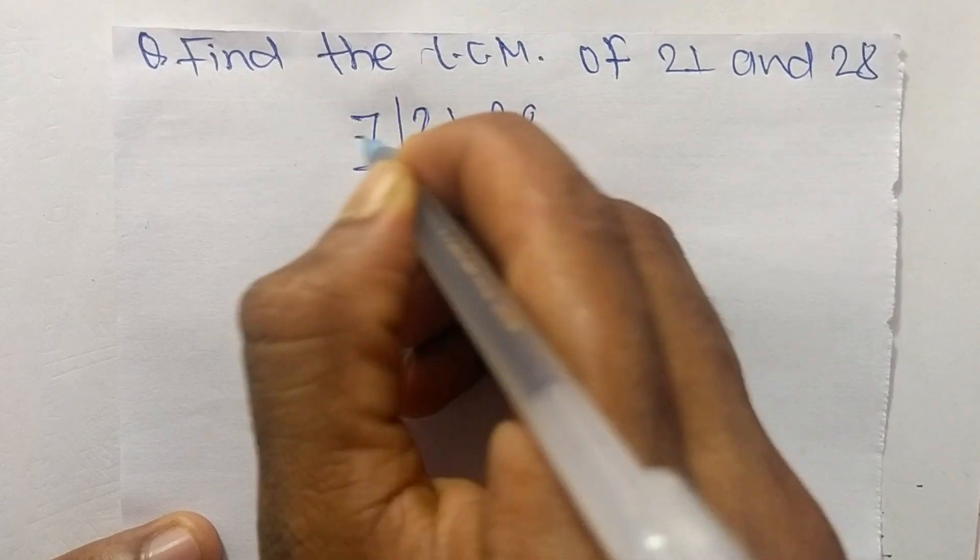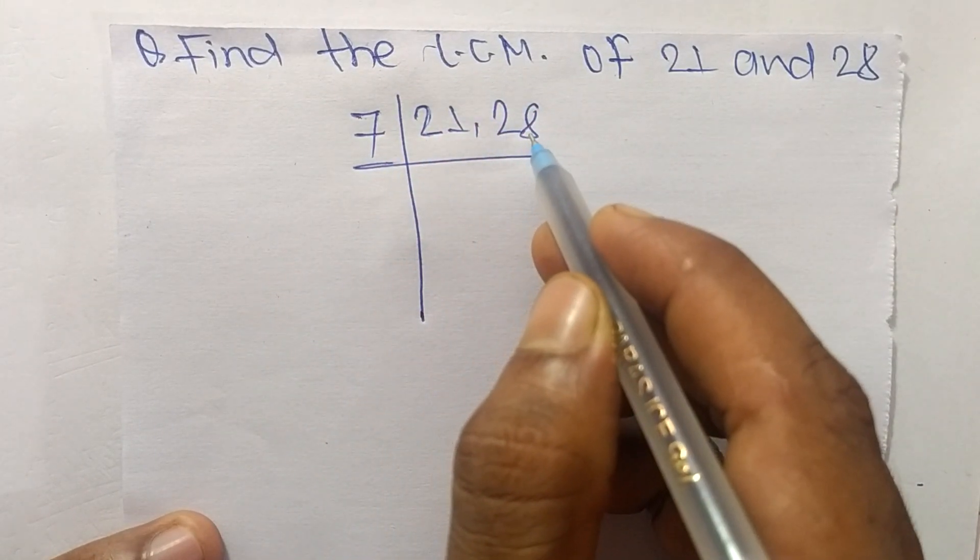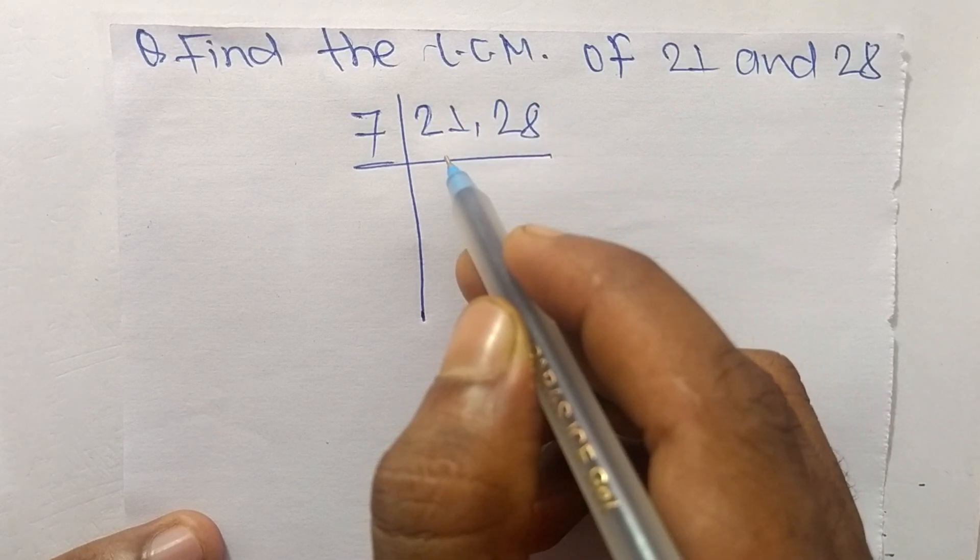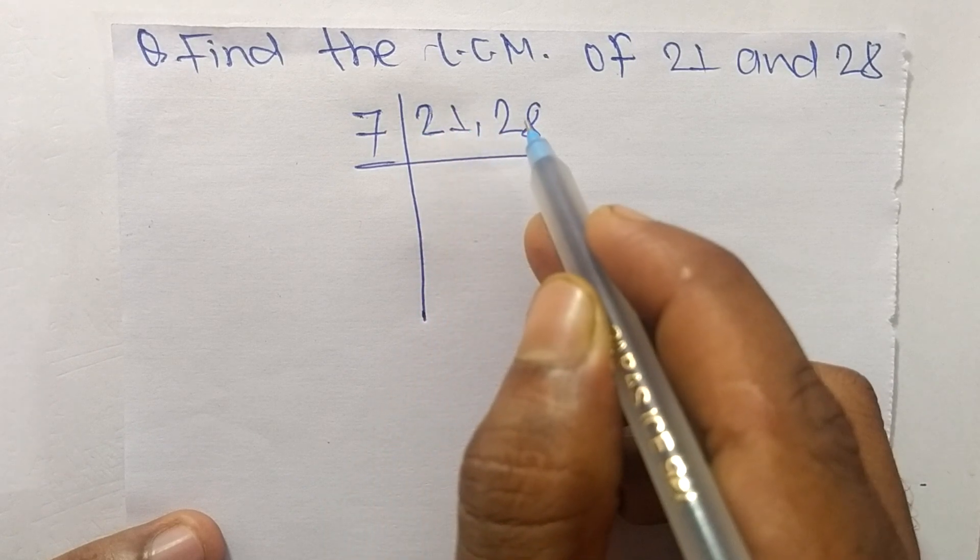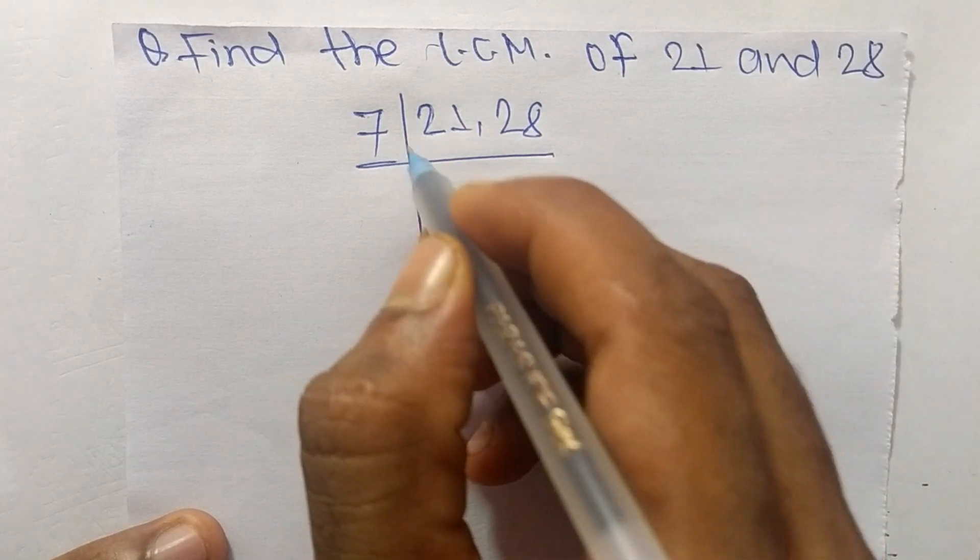The number is 7. When we take 2, then 2 can divide 28 but can't divide 21. When we choose 3, then 3 can divide 21 but can't divide 28. So we choose 7.